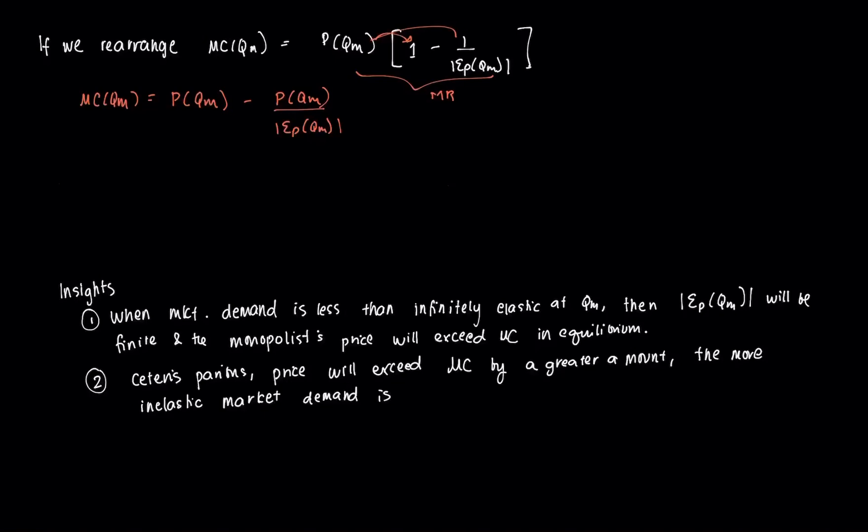Then we can rearrange this. So I'll bring this to the other side and I'll bring this to this side. So I get P(QM) over elasticity of the monopolist equal to P(QM) minus MC(QM).